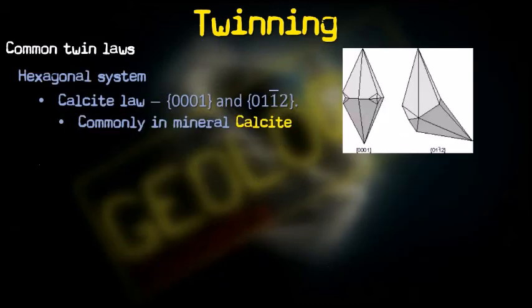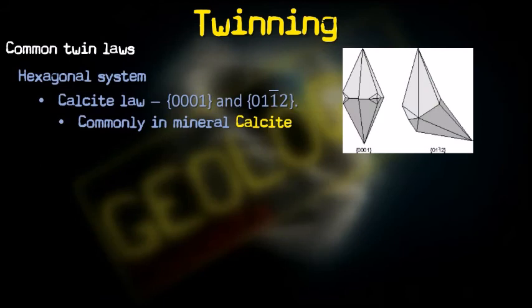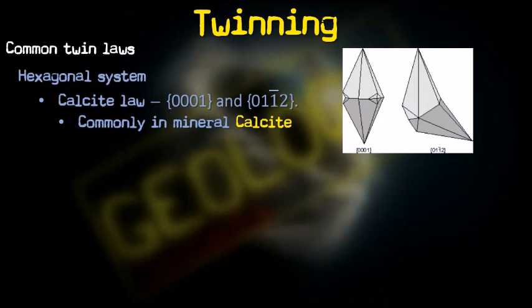In the hexagonal system, which uses four Miller-Bravais indices (H, K, i, L), calcite shows twinning with planes (0001) and (01̄12̄). The corresponding figures illustrate these twin orientations in calcite.